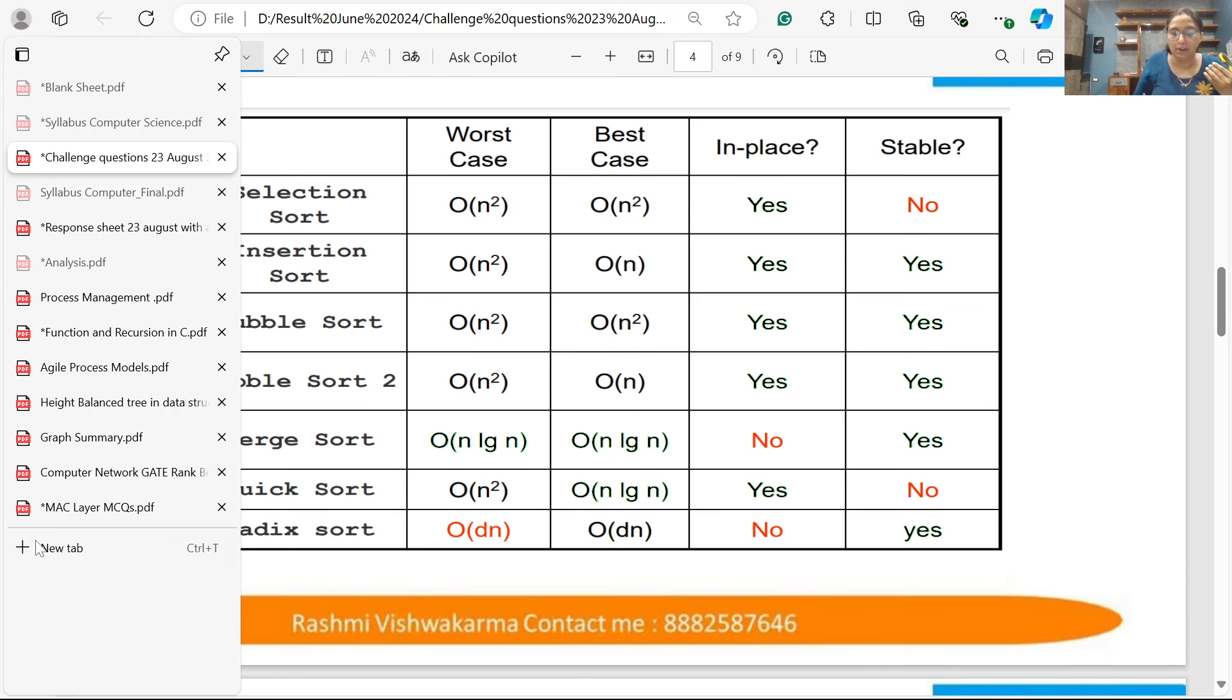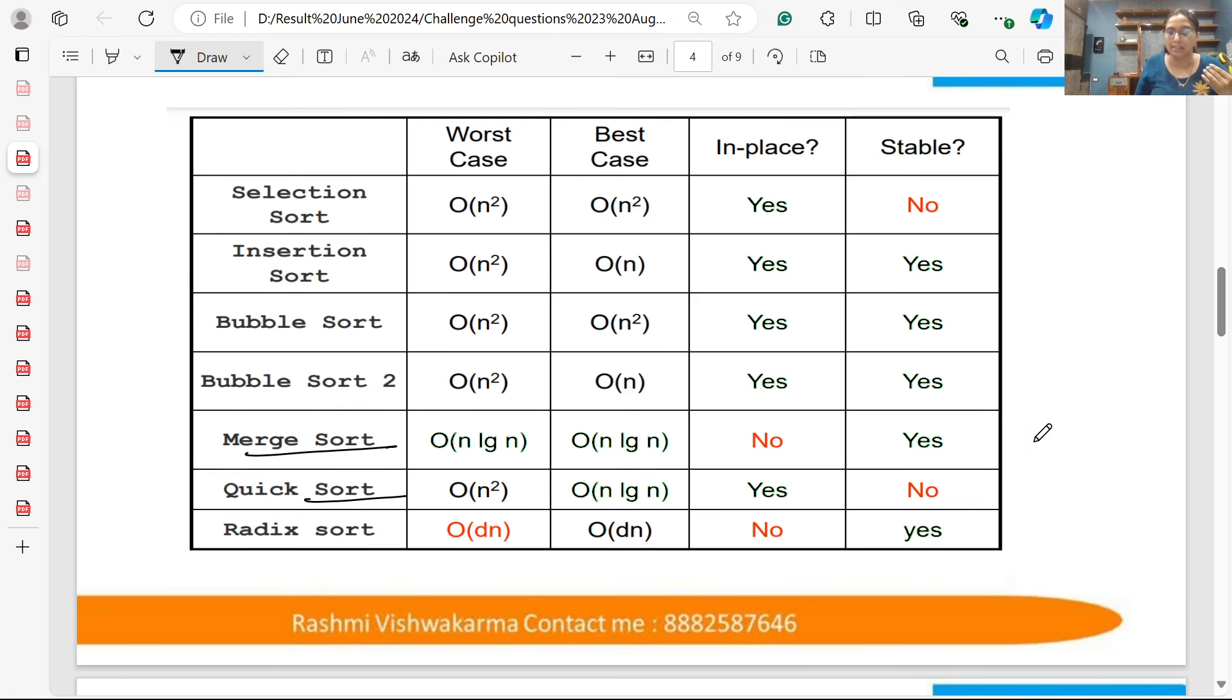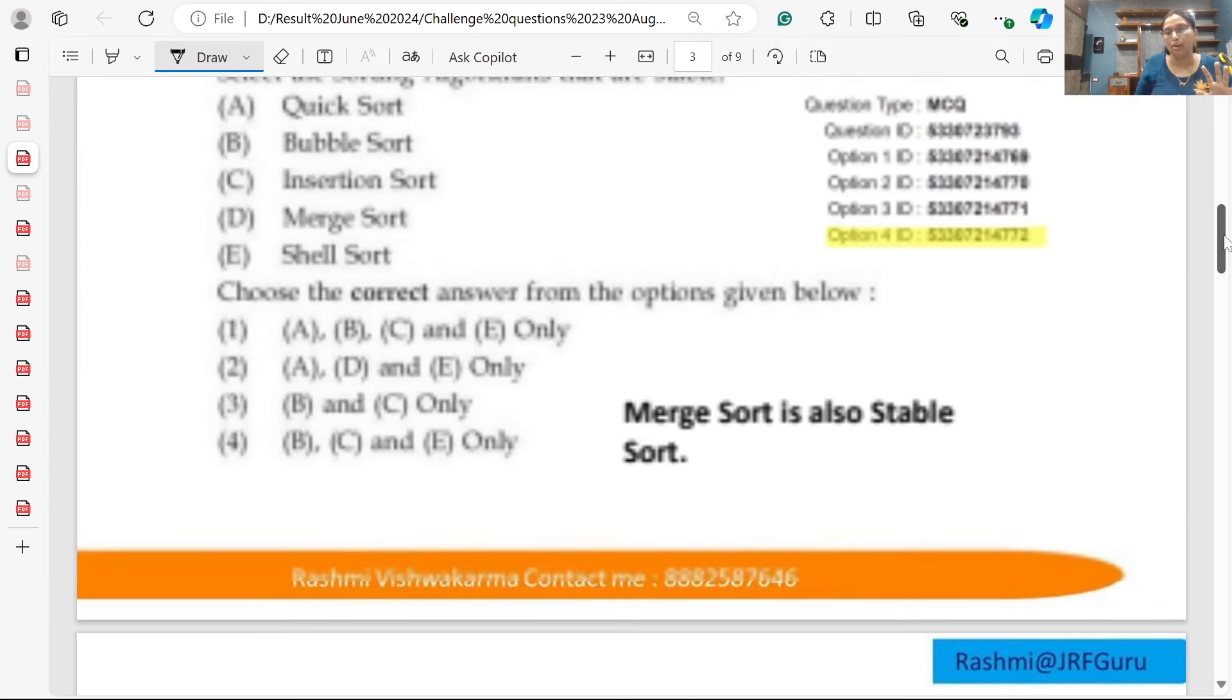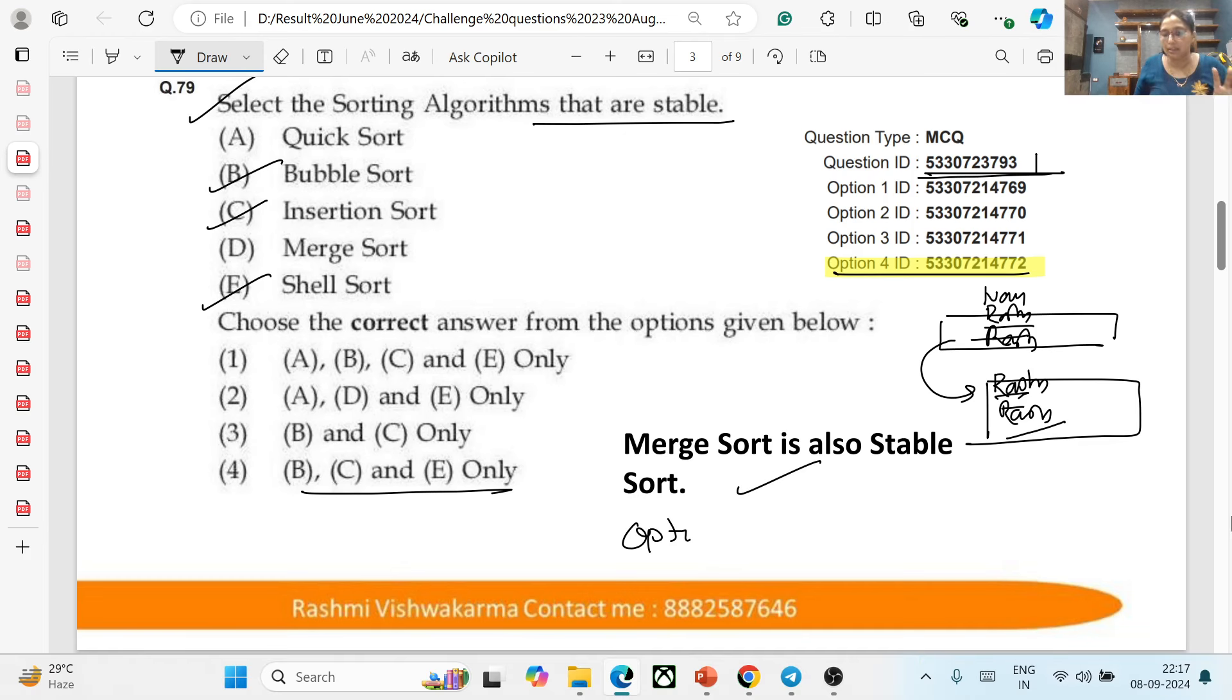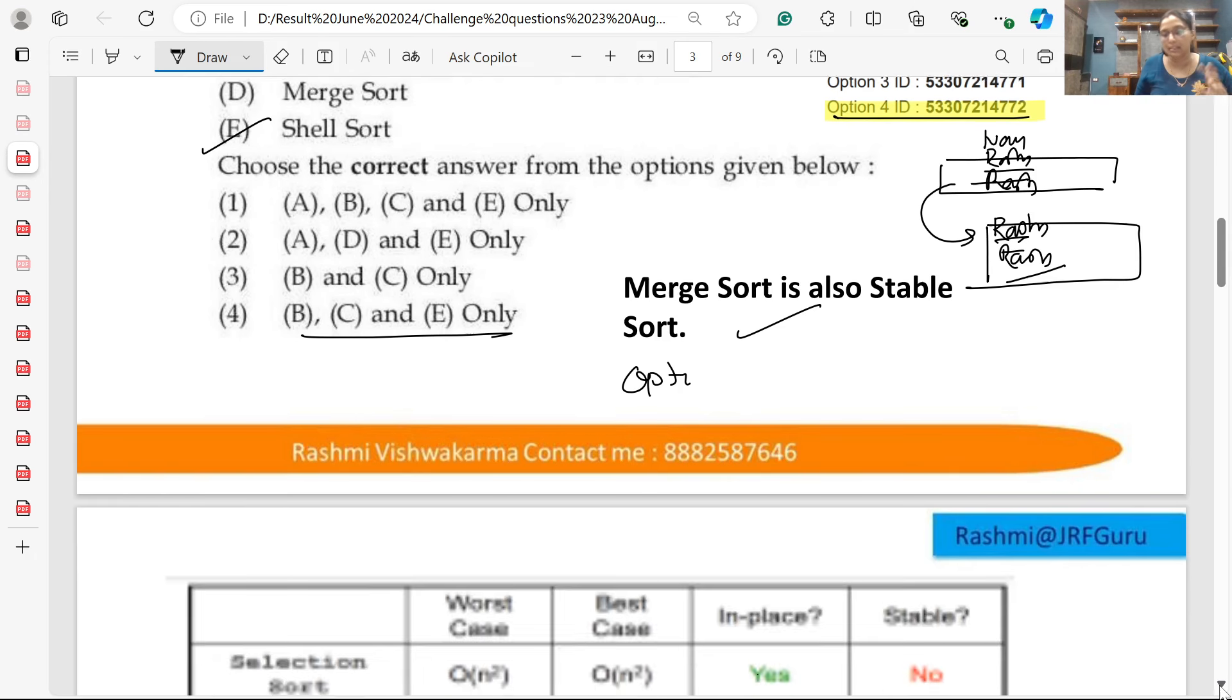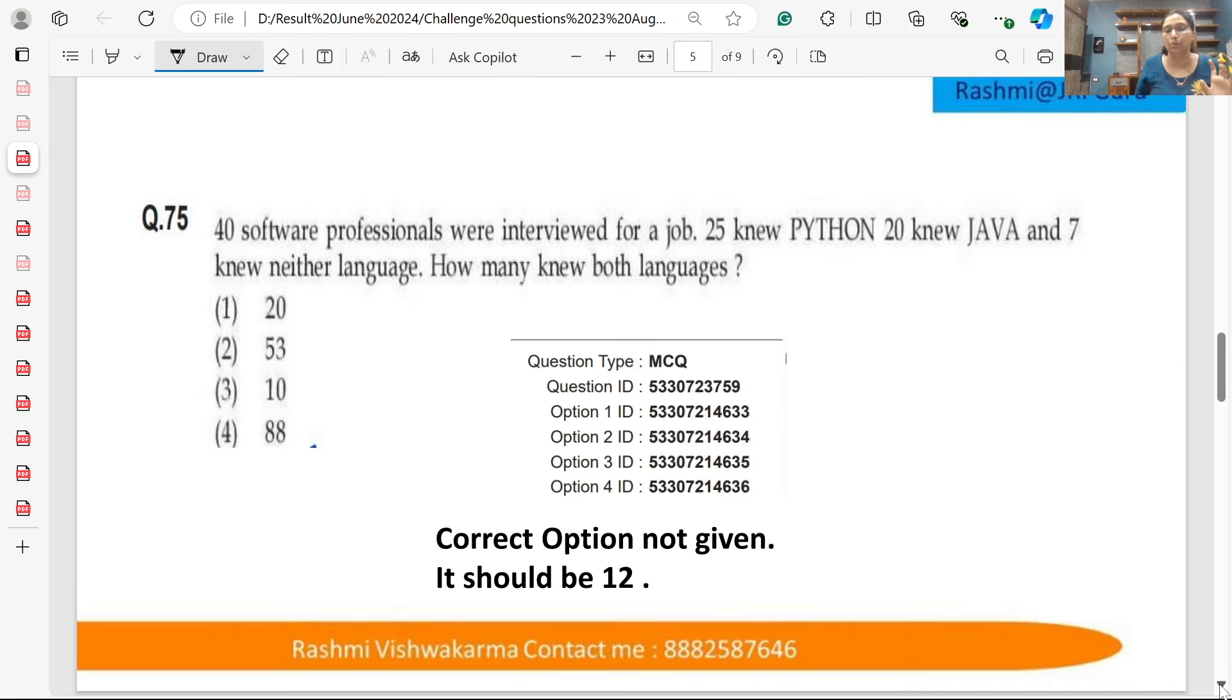But according to this table, merge sort is also stable. Quick sort is not stable, but merge sort is also stable. So we can challenge this question. The option is incorrect. You can mention that merge sort is also stable and it is not given in the options. So yes, you can drop it or cancel it.